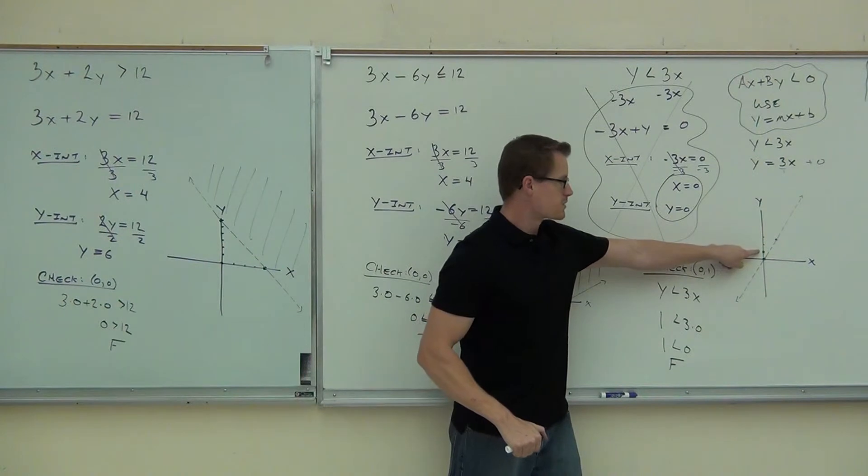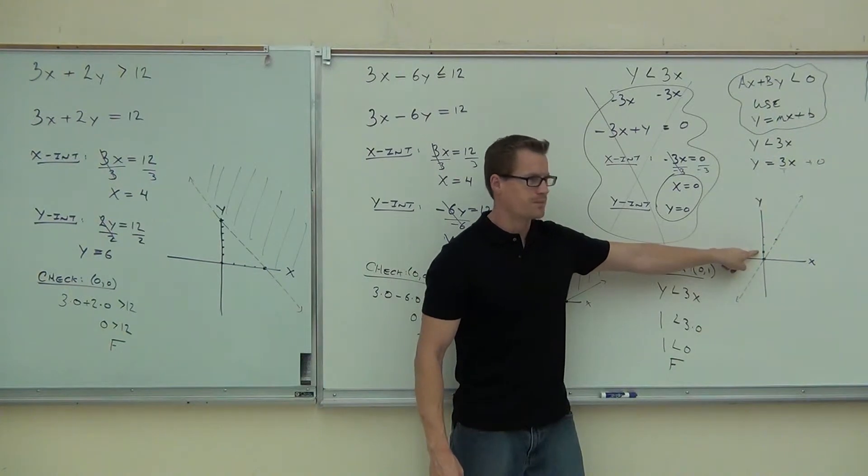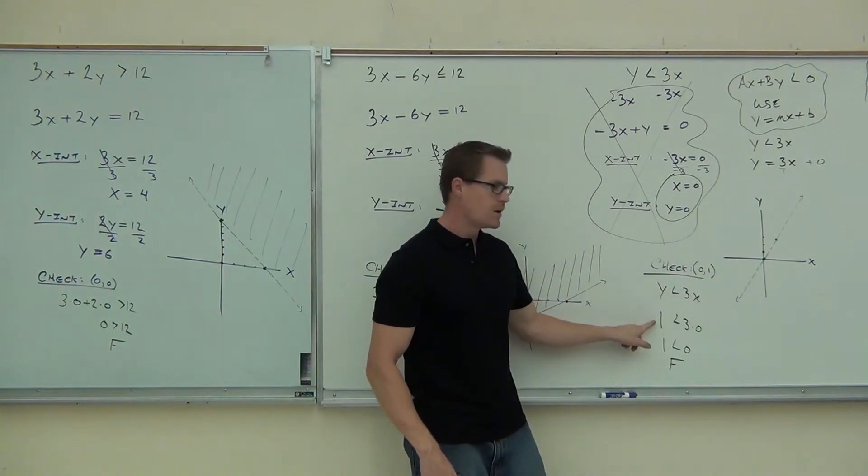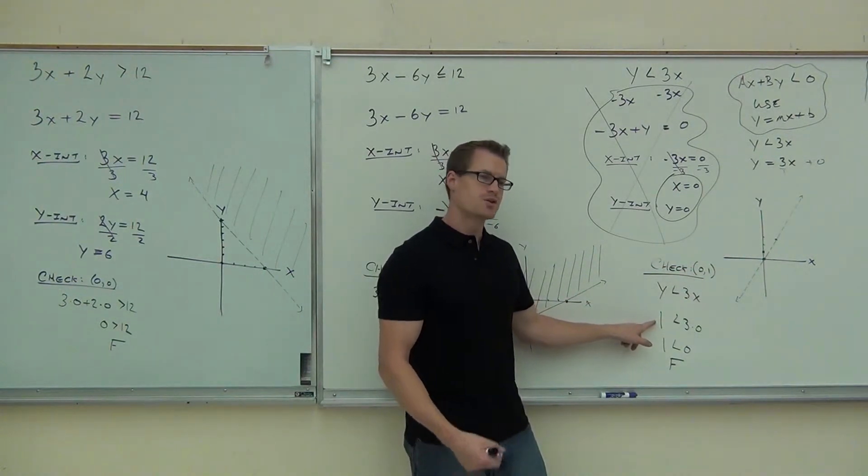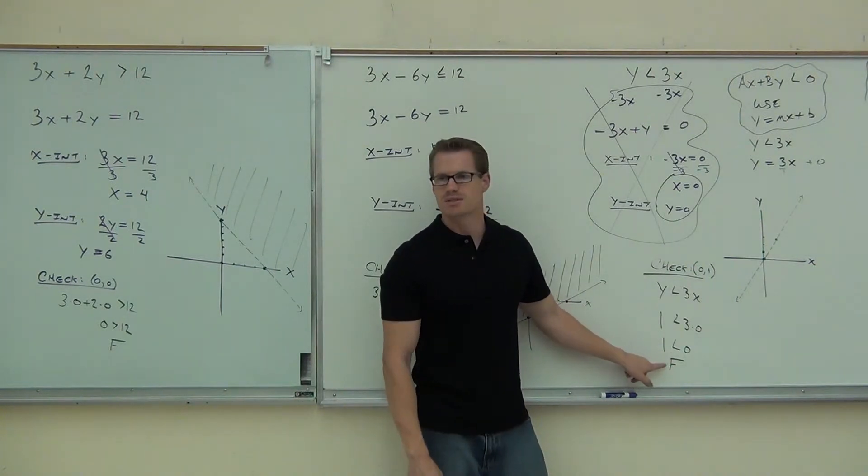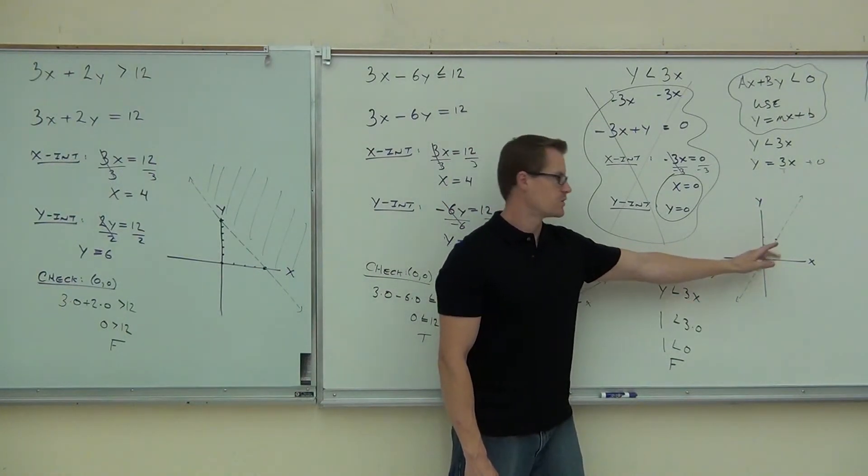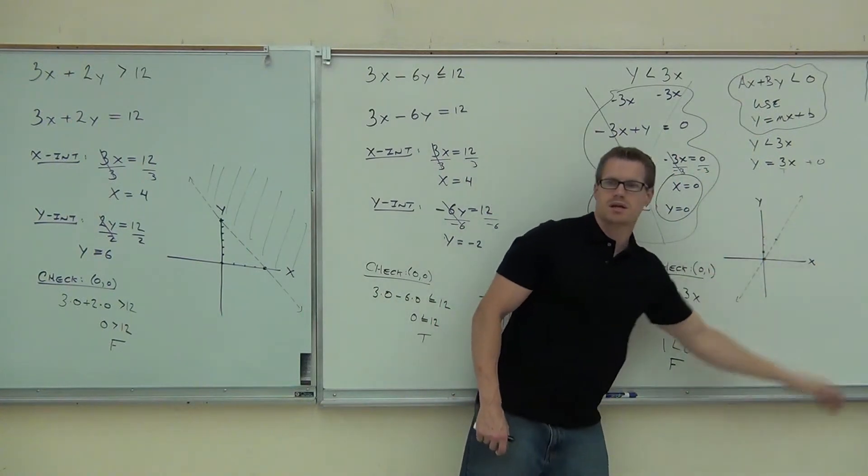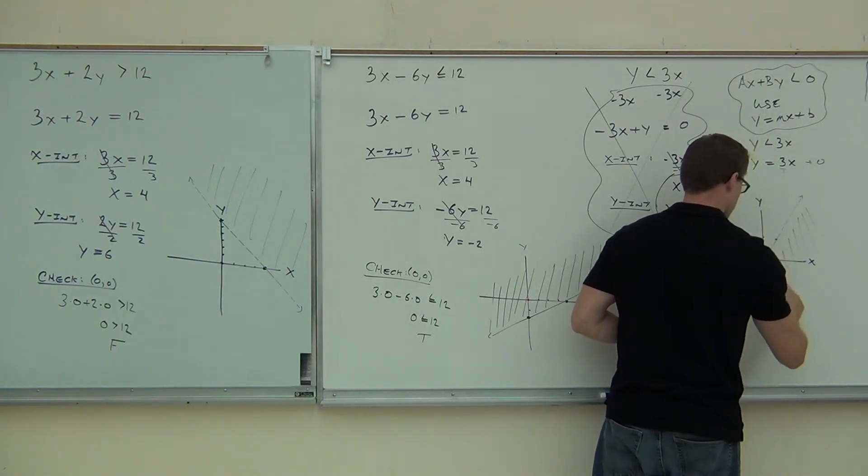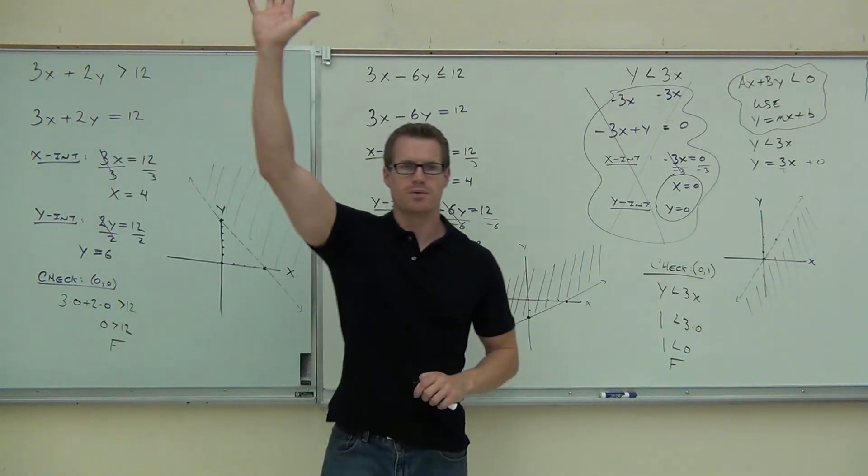Here's what we did. We checked this point right here, zero, one, because we couldn't check zero, zero. Zero, zero is on the line. You can't check that. We checked zero, one. Zero for x. One for y. That fills out our inequality for us. We make sure we check this down, see if it's true or false. One is less than zero. One is not less than zero. That means it's a false statement. So here's what happened. We checked this point, and it was false. Are we going to shade the top side or the bottom side? The bottom side. And that's a perfectly fine looking graph. Would you make sure I feel okay with that one?